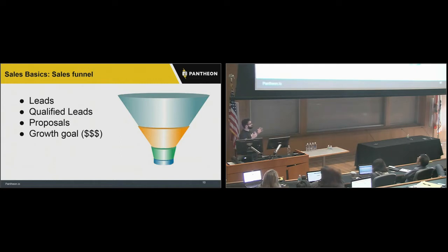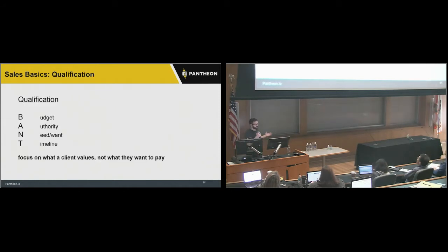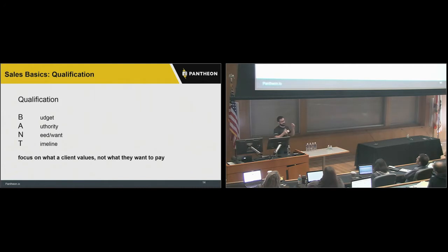There are two specific client engagement processes I want to talk about: discovery and qualification. These are specific actual meetings where the basic goal is to move someone from a higher stage in the funnel to a lower one. The first is qualification. BANT is the most common framework: Budget, Authority, Need, and Timeline. Am I talking to someone with budget commensurate with my services? Am I talking to the person who can sign the check? Does this person actually need or want the things I provide? And is their timeline in line with my typical project timelines?